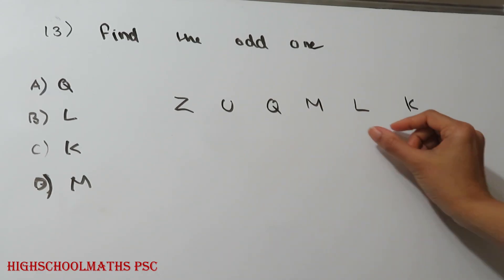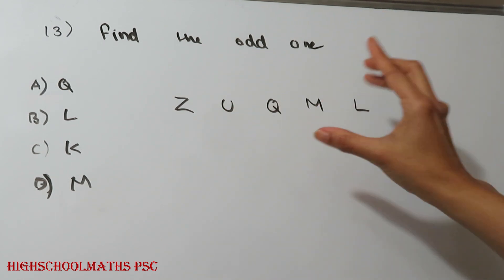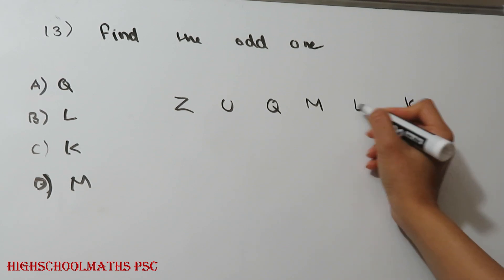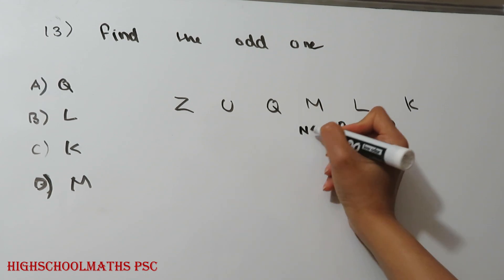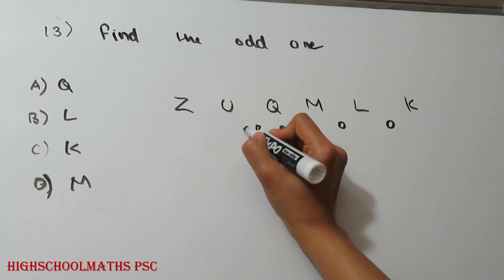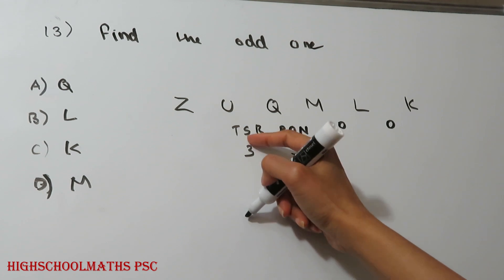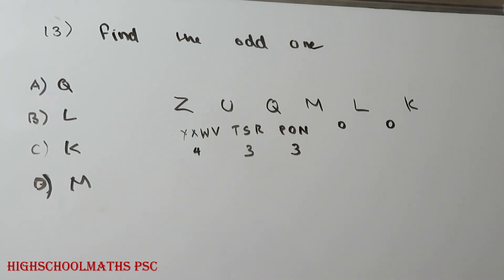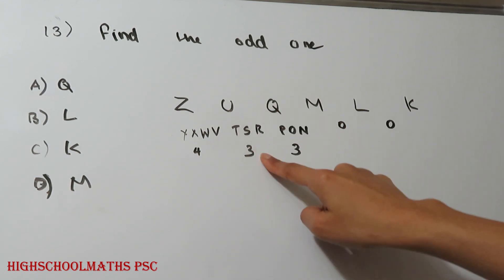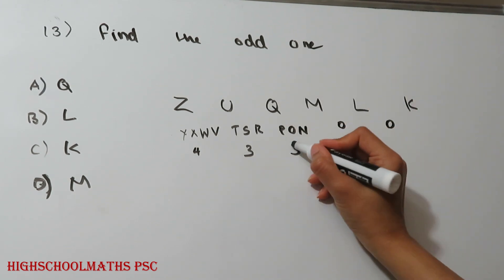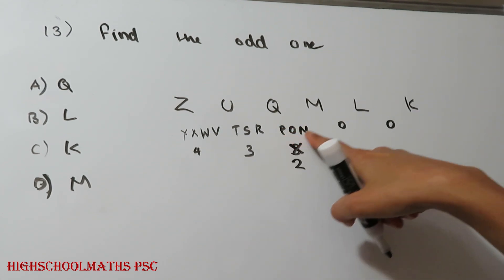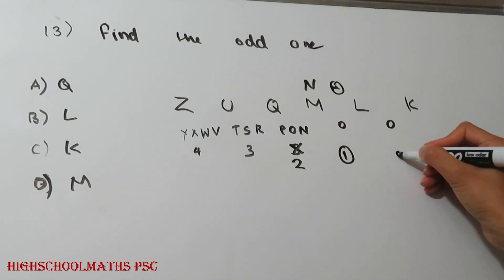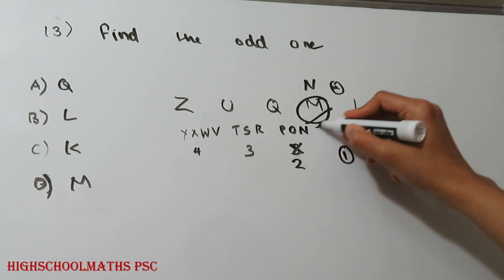Question number 13: Find the odd one out in the letter series. Taking a series of letters from the English alphabet: L, M, then N, O, P — three letters gap — Q. Then Q, R, S, T, U — three letters. Checking T: the pattern requires 3 letters between each pair. M is the odd one out. Option D.